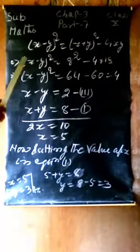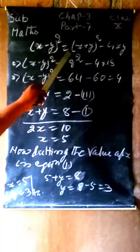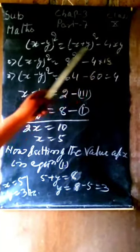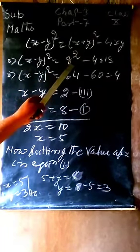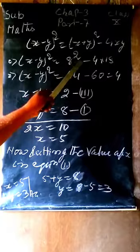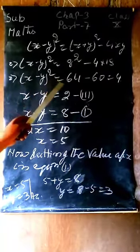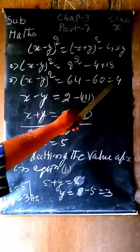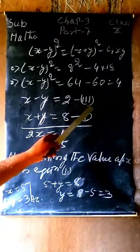Now here we will use an algebra formula: x minus y whole square equals x plus y whole square minus 4xy. So x minus y whole square equals x plus y was given as 8, so 8 squared minus 4 into 15. Then x minus y whole square equals 64 minus 60 equals 4. Then x minus y equals 2. This is equation third.